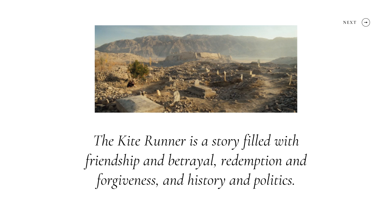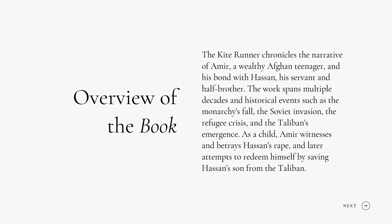The Kite Runner is a story filled with friendship and betrayal, redemption and forgiveness, and history and politics. It chronicles the narrative of Amir, a wealthy Afghan teenager and his bond with Hassan, his servant and half-brother. The work spans multiple decades and historical events such as the Monarchy's fall, the Soviet invasion, the refugee crisis, and the Taliban's emergence. As a child, Amir witnesses and betrays Hassan's rape, and later attempts to redeem himself by saving Hassan's son from the Taliban.